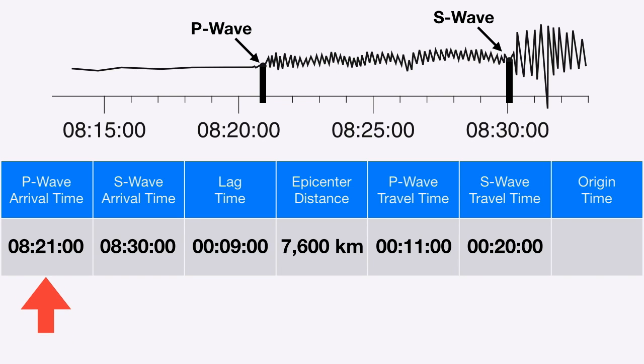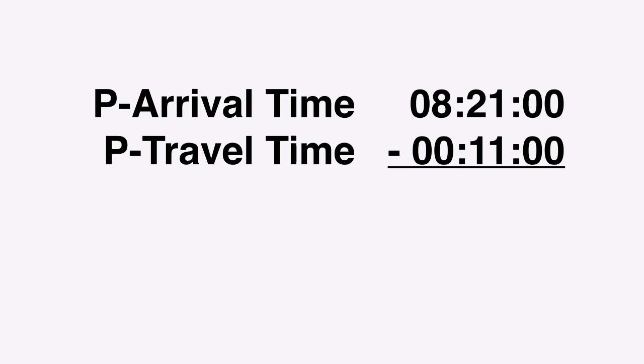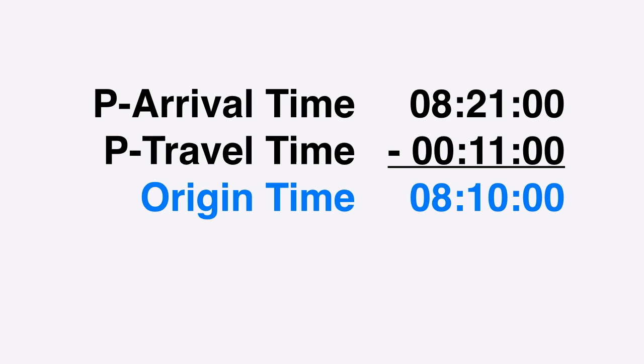I want to know what time on the clock the earthquake actually occurred. I'll look at my P wave arrival time — the time the P wave got to my seismogram — and the P wave travel time, which is how long it traveled before getting to me. Think of it like a pizza delivery man: if he arrived at my house at 8:21 and it took him 11 minutes to get here, I can figure out what time he left the pizza place. We do a subtraction: P arrival minus P travel. The P wave arrived at 8:21 after traveling 11 minutes, which means it left the earthquake at 8:10. So the origin time was 8:10.